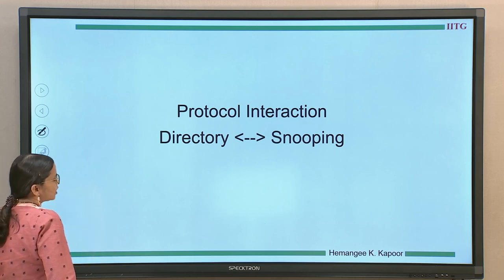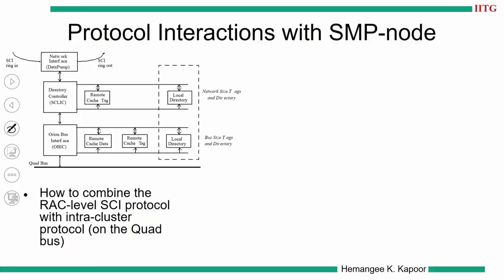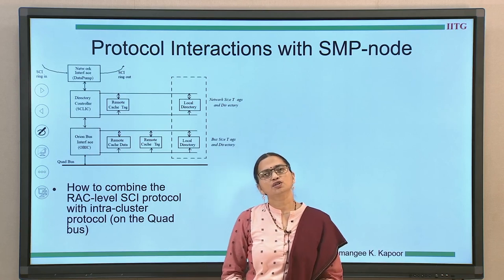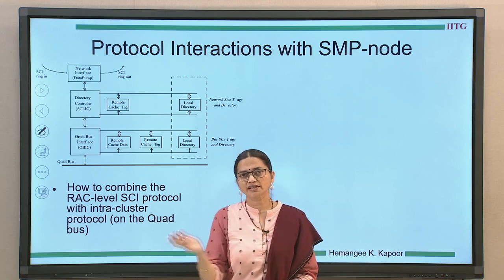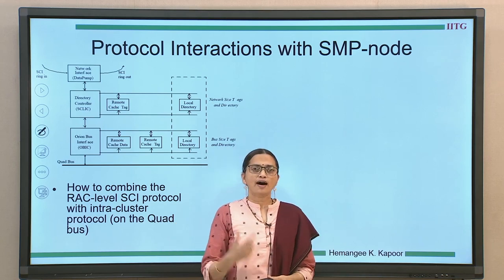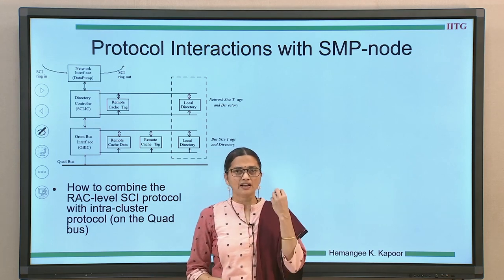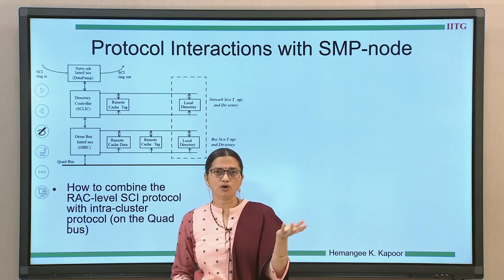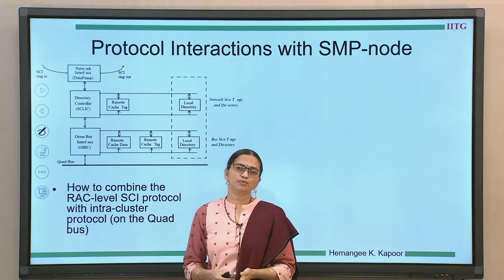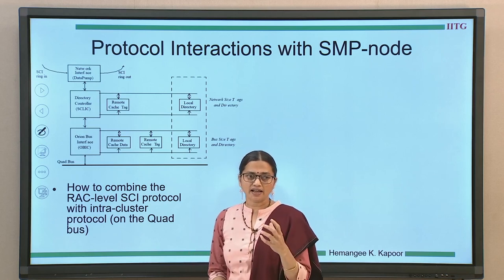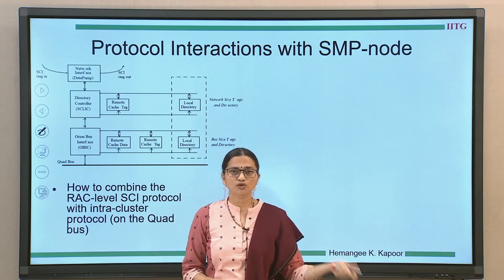The next topic is protocol interaction between the directory and the snooping protocol. The NUMAQ architecture has a SCI ring to which quads are connected — every quad has four processors connected over a quad bus. Inside the quad we have the snooping protocol; outside we have the SCI directory protocol. The RSE is the only visible entity from the quad to the outside, representing a pseudo-processor or pseudo-node for the outside protocol.